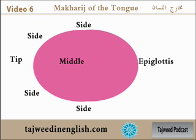When you pronounce sad, ra, lam, qaf, kaf, or ta, do not use your lips. Lips do not have anything to do with makharij al-lisan, the points of articulation of the tongue. We are going to see this in details.